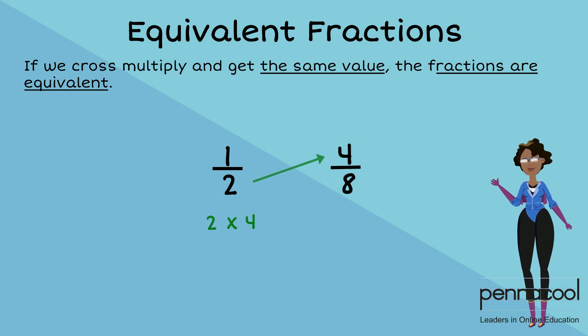We multiply the two by four and get a product of eight. We then multiply the one by eight, again getting a product of eight. These fractions are therefore equivalent.